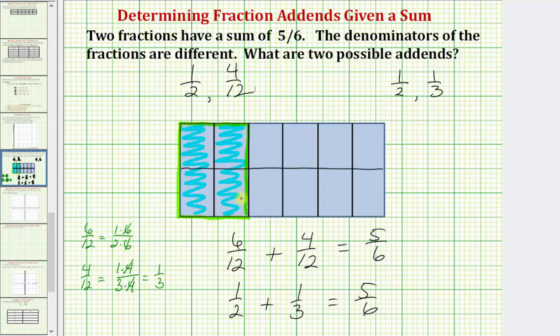So here's the four-twelfths, but notice how if we partition the rectangle into three equal pieces, notice how we can see that four-twelfths is equivalent to one-third. I hope you found this helpful.